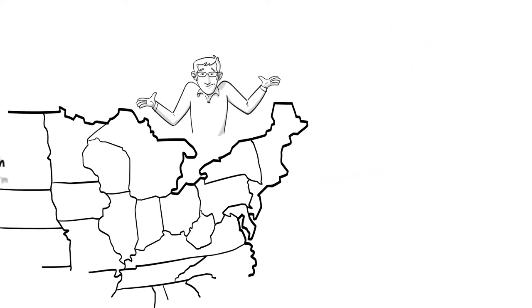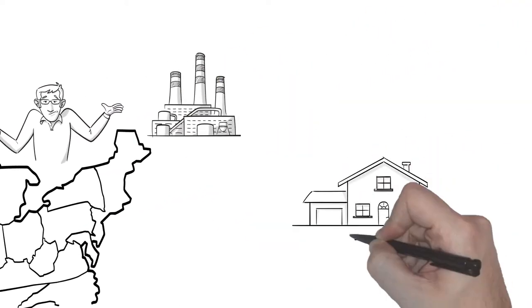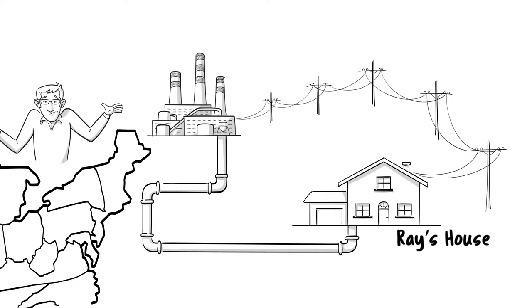How you ask? Utilities deliver Ray's energy. They own and maintain the wires and pipes. There isn't much choice there.